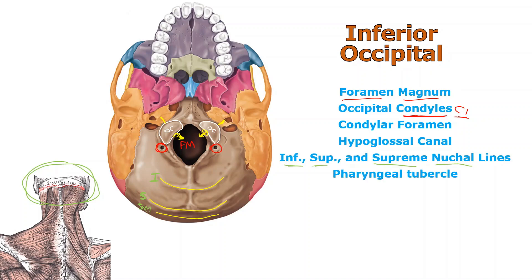The pharyngeal tubercle is right here, anterior to the foramen magnum. The word pharyngeal refers to the pharynx, or the muscular throat. So muscles of the throat will attach at the pharyngeal tubercle to allow you to swallow and talk — things we'll discuss in further lectures.